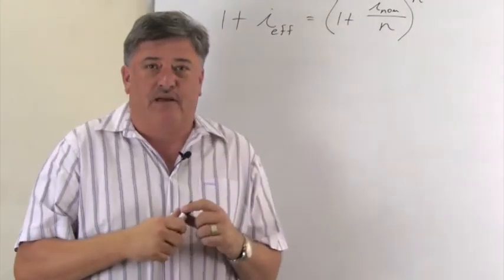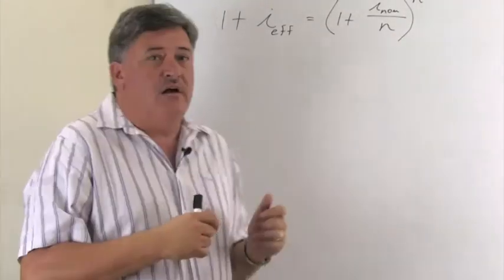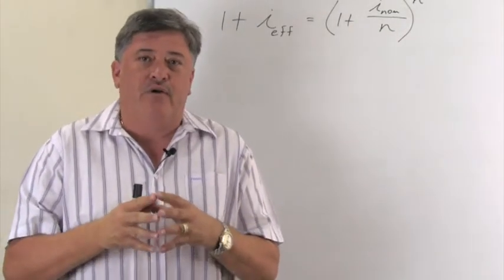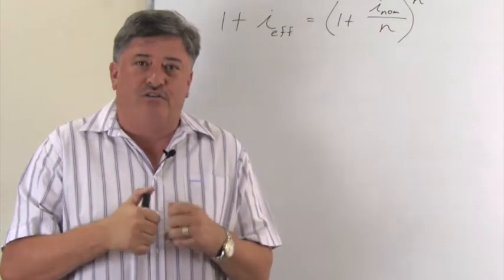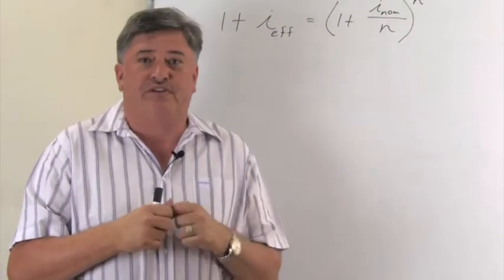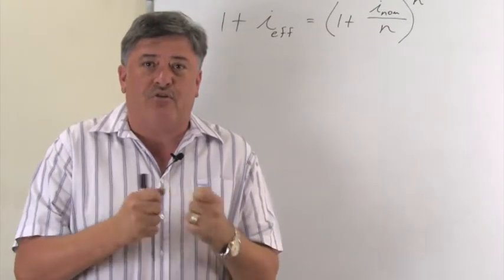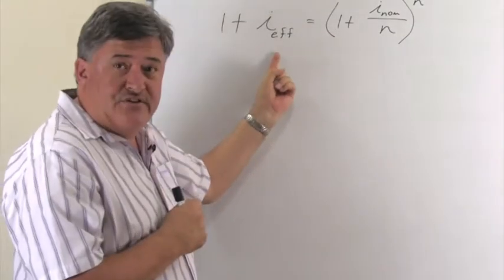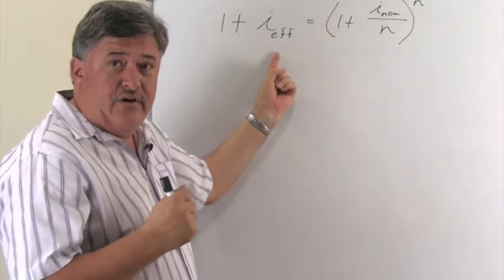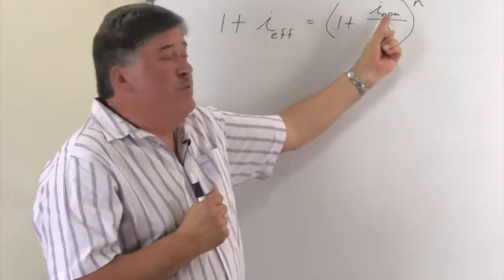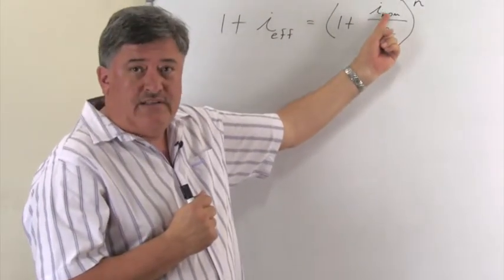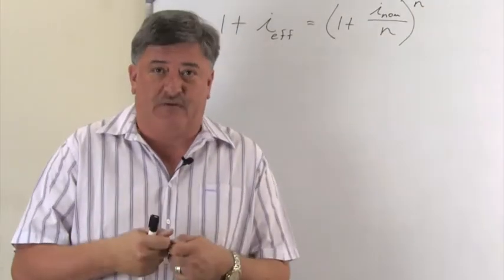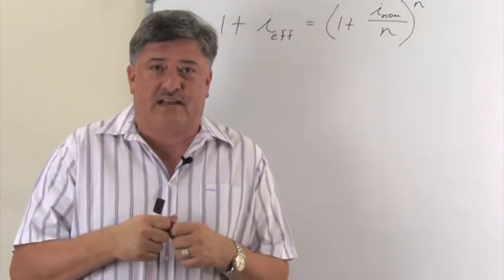So when you look at this formula, you will notice that there are no amounts involved here. So it's not about how much money you're going to invest. It's also not for how long you're going to invest it. This formula is only about converting interest rates. So we want to find the effective interest rate, that is the annual rate or the yearly rate, if we know the nominal rate. This n and the exponent of n, that is how many compoundings.